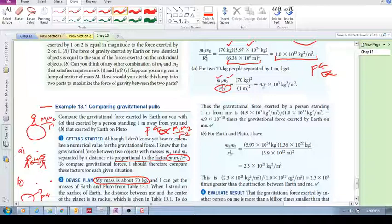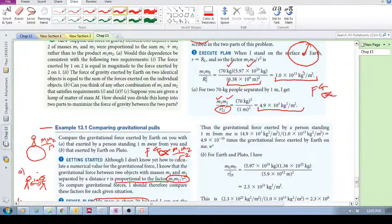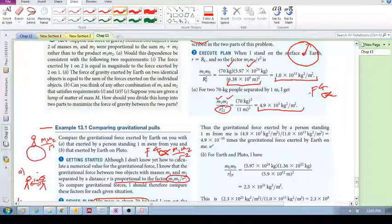So you get this 4.9 times 10 to the 3. So all we can do, guys, is compare, is to compute ratios. Okay? So we take this guy and we divide it by this guy. And so that's what they're doing here.